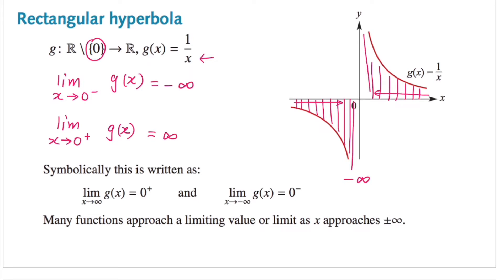Now let's shift our perspective. We can see that as x increases through positive values — as x gets bigger and bigger on the right-hand side — the graph approaches 0, because the line is going down. Likewise, as x decreases through negative values, when x is getting smaller on the left-hand side, the graph also approaches 0. But since we have asymptotes, the x-axis is the horizontal asymptote, so this rectangular hyperbola never reaches 0. Symbolically, the limit as x approaches positive infinity, the graph approaches 0 from the positive side, and the limit as x approaches negative infinity, the graph approaches 0 from the negative side.